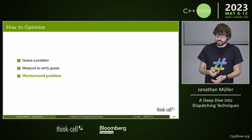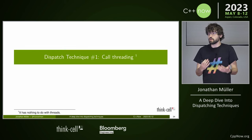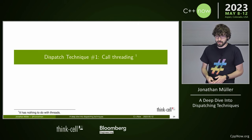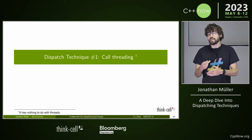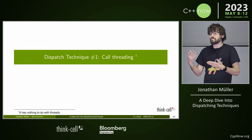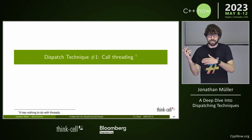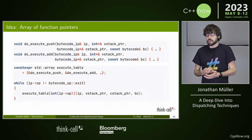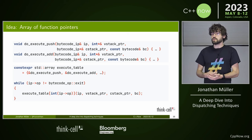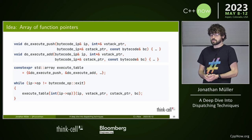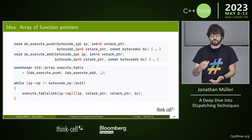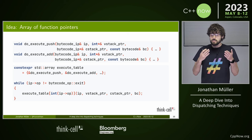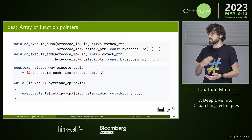One way to work around branch prediction problems is to switch to a different dispatching technique. The first one is called threading — it has nothing to do with threads, that's just what it's called. The idea is to use an array of function pointers: we have a separate function for each opcode, a big array of those, and inside our loop we directly jump to the appropriate function pointer.